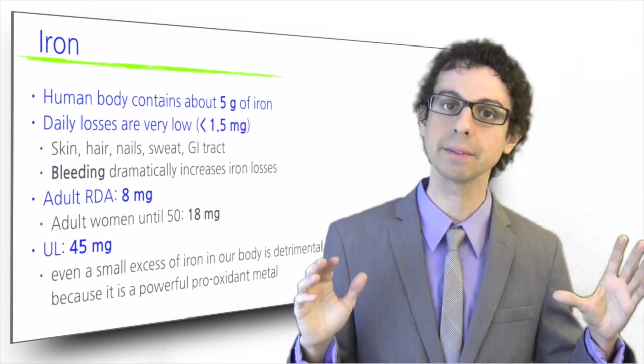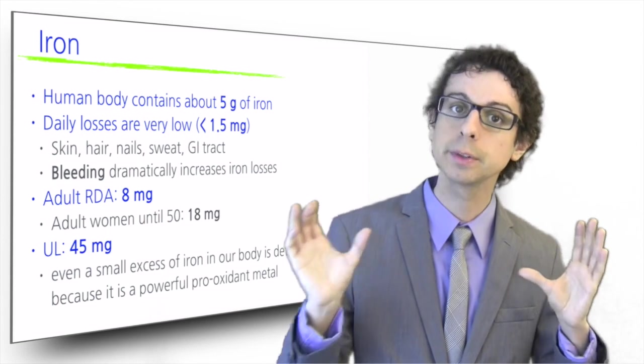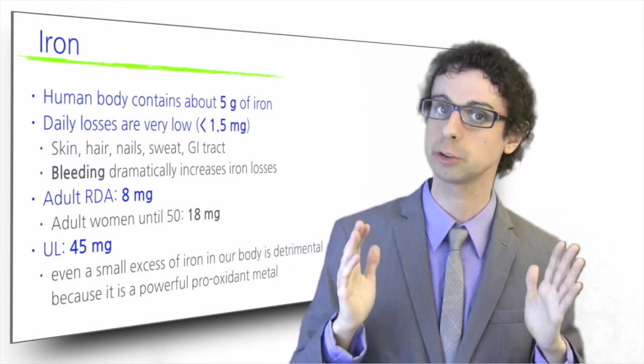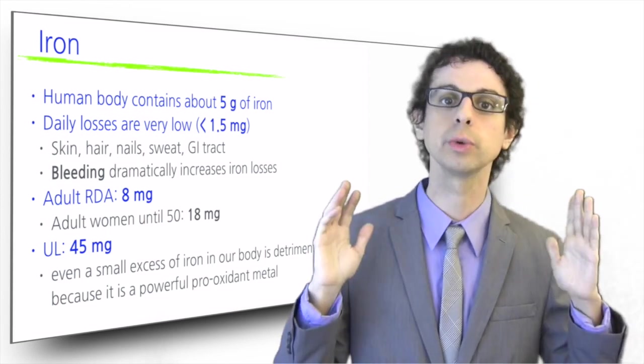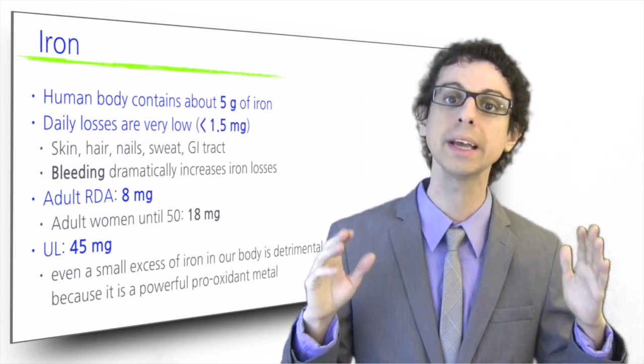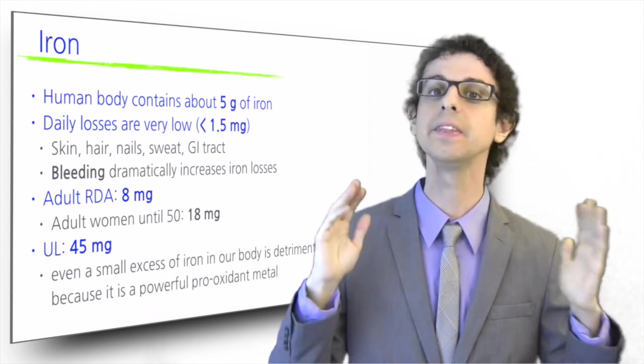For this reason, the upper level for iron is set at 45 milligrams so that the gap between too little and too much is not too wide. Iron is really one of those nutrients for which we have to make an extra effort to make sure we get just about what we need, not too much less and not too much more.